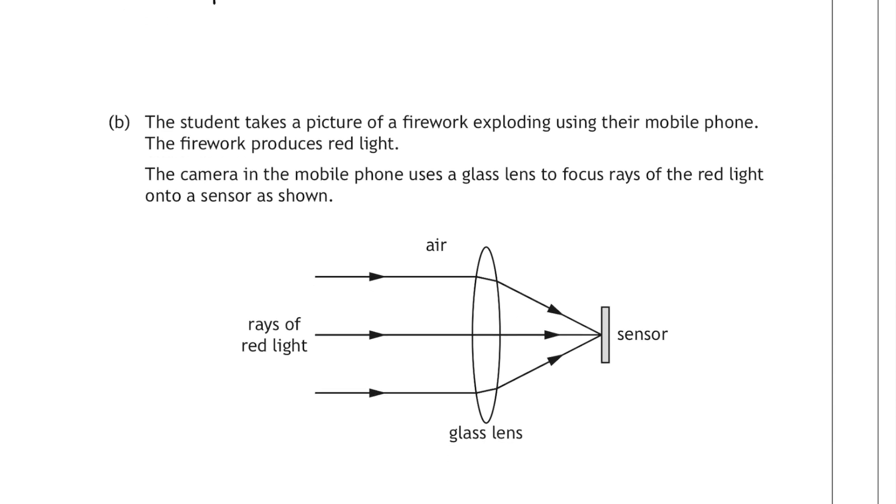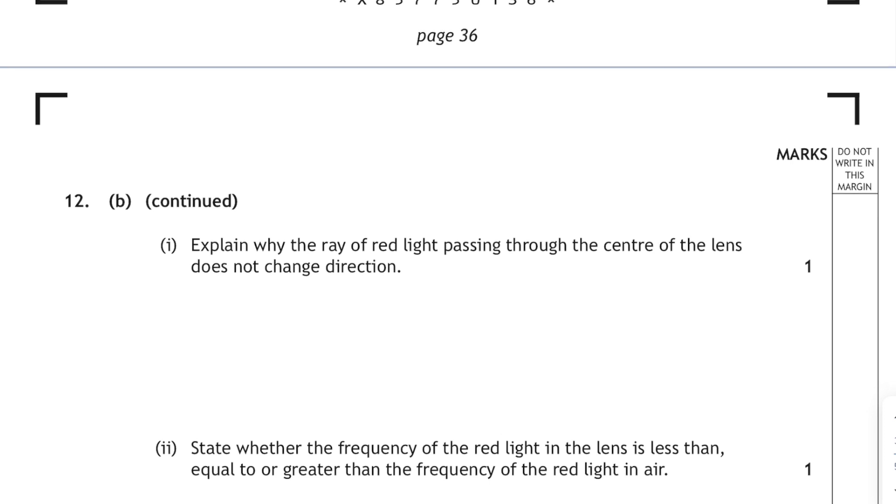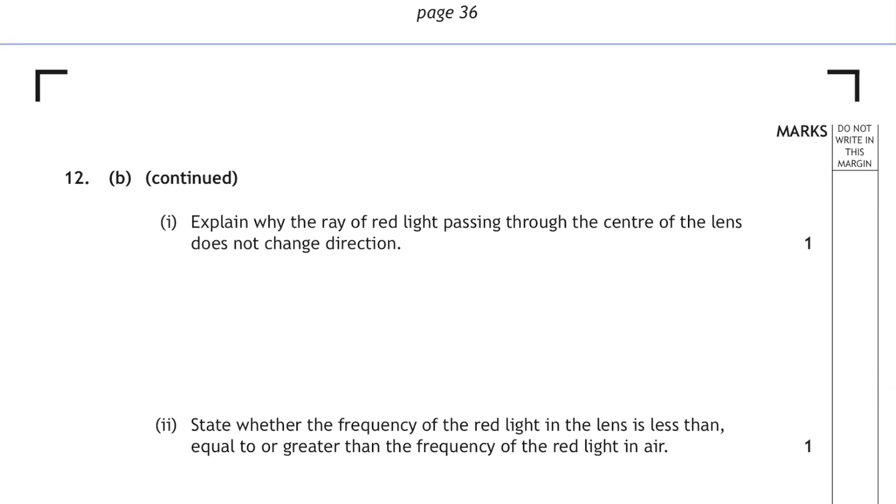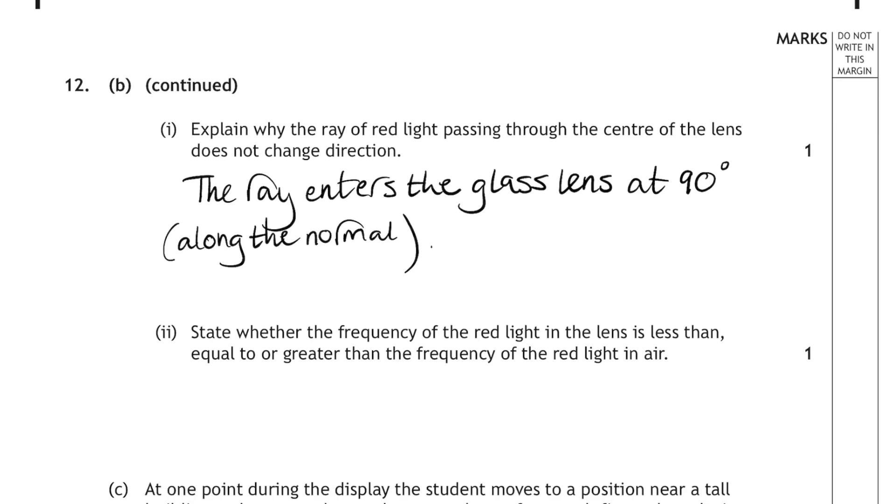Part B, the student takes a picture of a firework exploding using their mobile phone. The firework produces red light, and the camera in the mobile phone uses a lens to focus the rays of the red light onto a sensor as shown. Part 1, explain why the ray of red light passing through the centre of the lens does not change direction. Well, that's because the ray enters the glass at 90 degrees. You can see that on the diagram, the middle one of the three parallel rays is hitting the surface of the lens perpendicular to that surface. Therefore, it's travelling along the normal, and it's undeflected. Part 2 says to state whether the frequency of the red light in the lens is less than, equal to, or greater than the frequency of the red light in air. Well, frequency doesn't change. The number of waves per second doesn't change. So the frequency is the same.